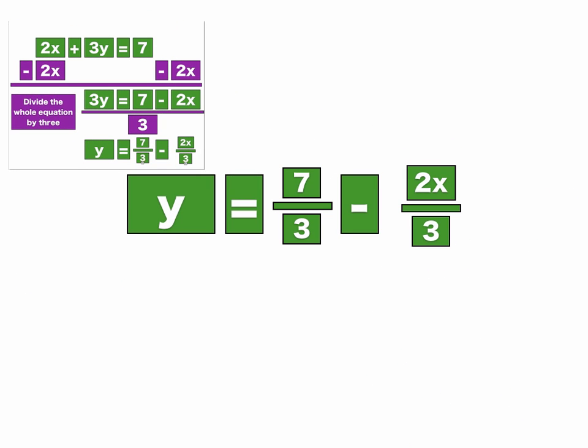So I'm going to move on. If you're confused, just rewind the video, watch it again until you understand it. So now we have y equals 7 thirds minus 2 thirds x.